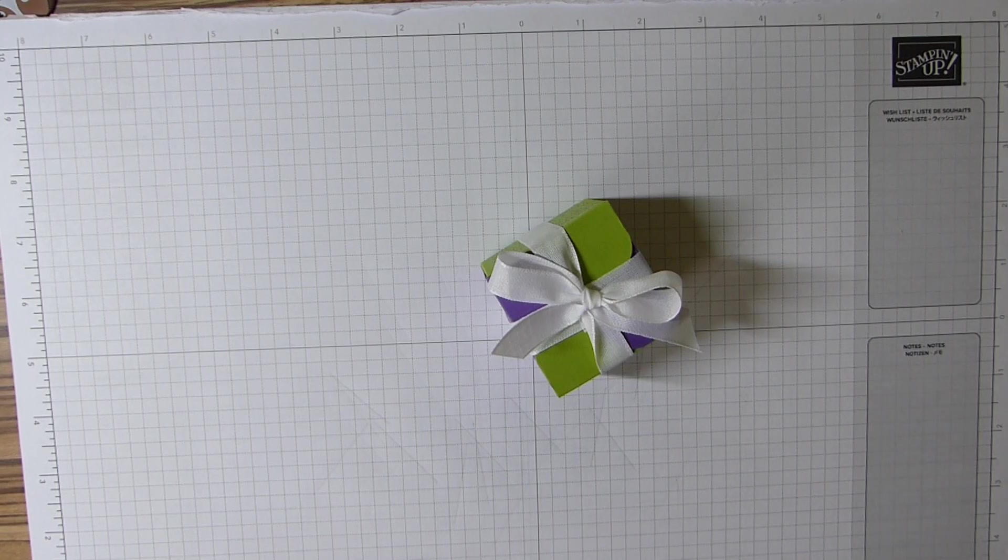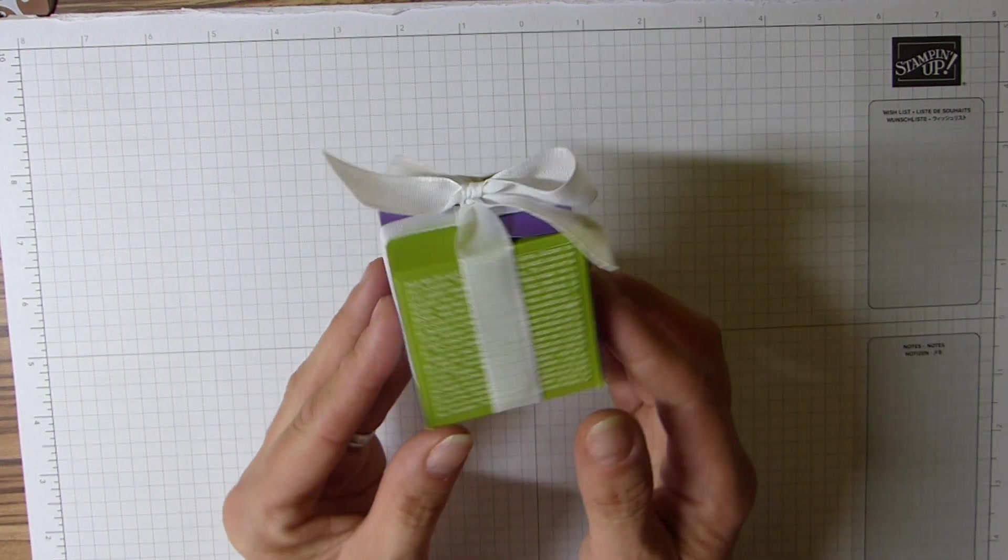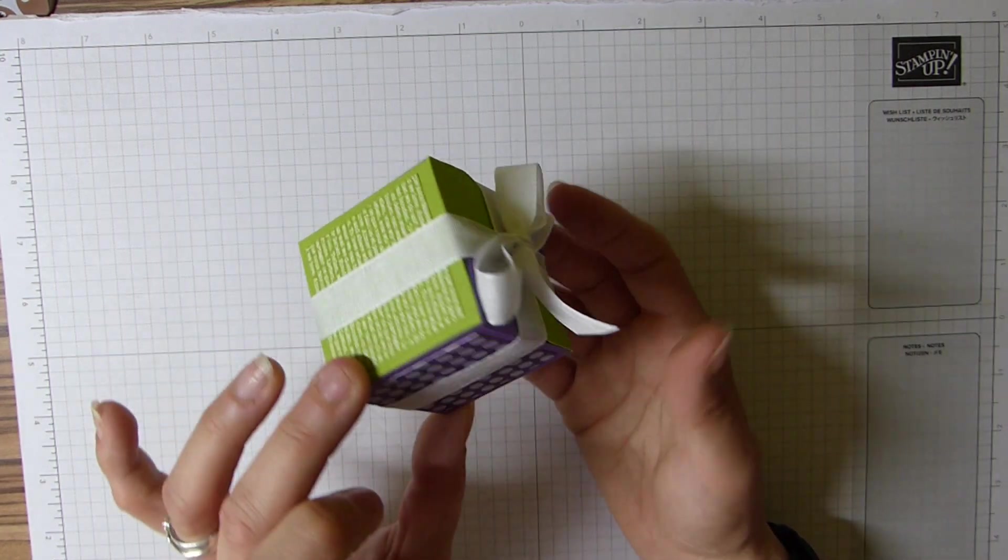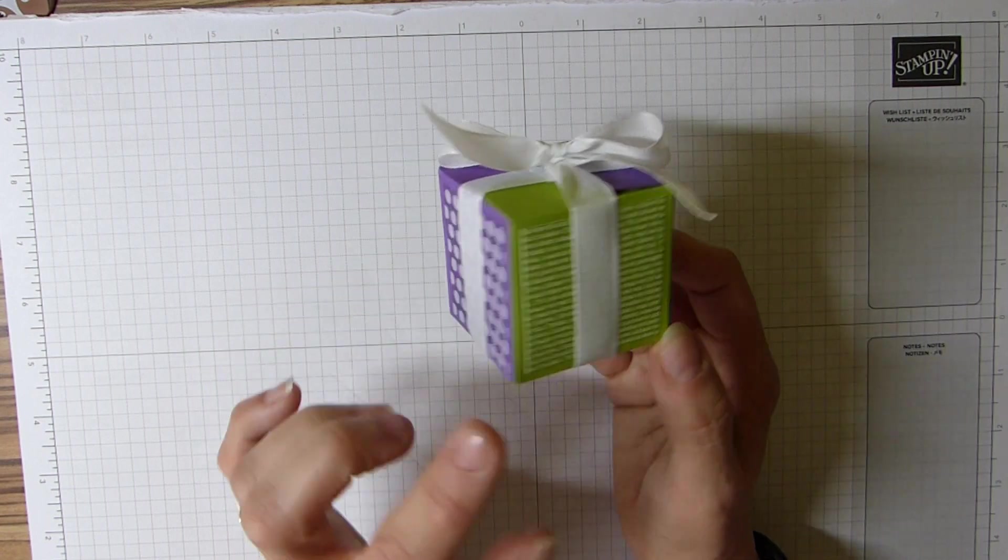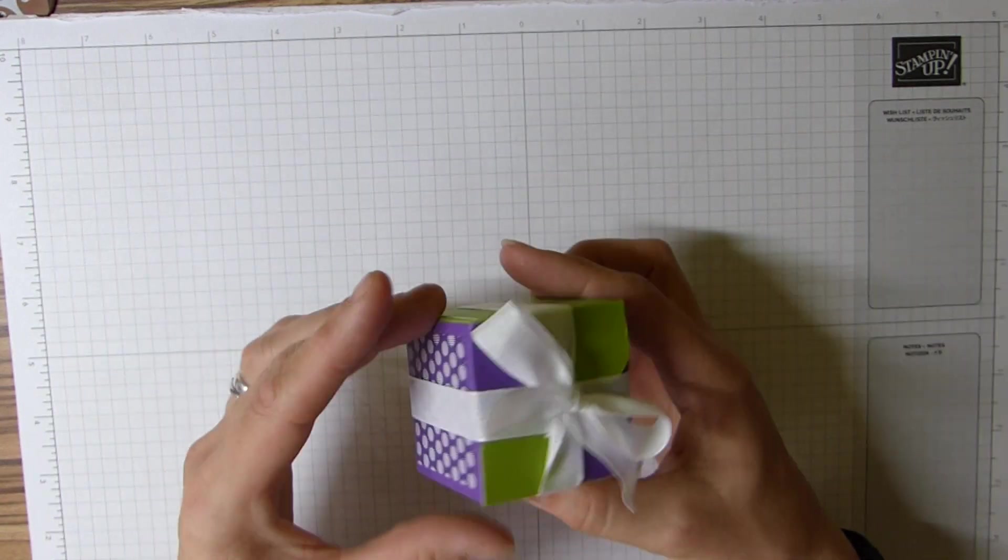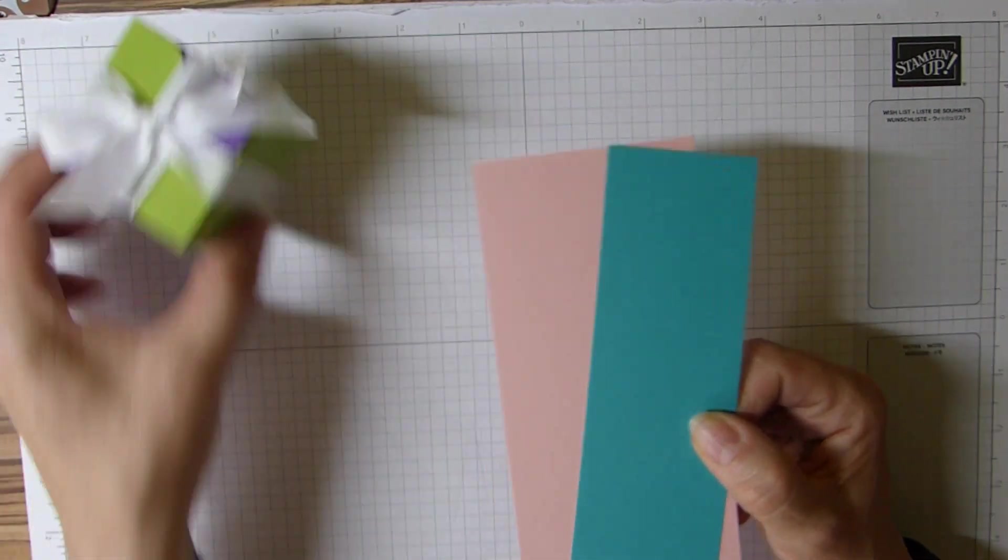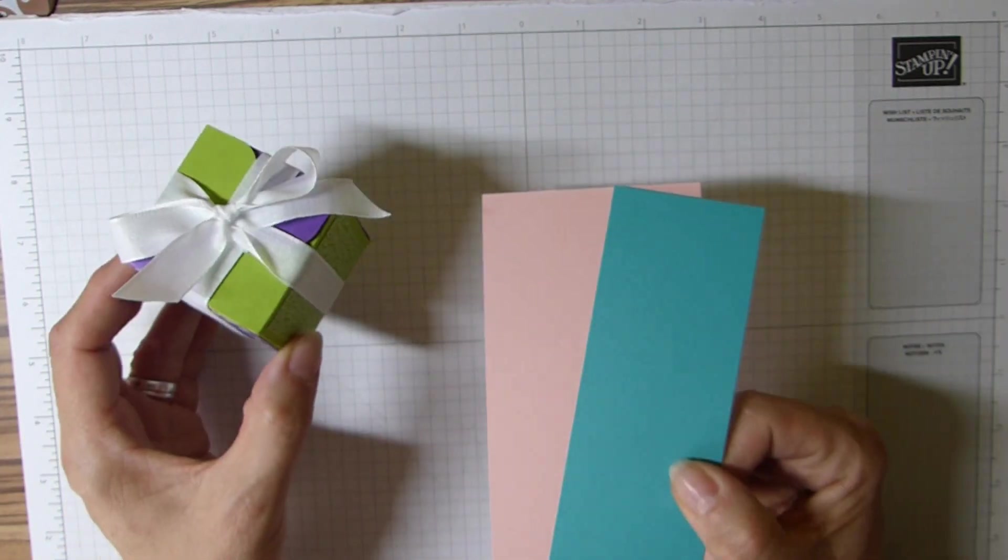Hi everybody, it's Sally from Sally Stampers, thank you for joining me today. Today I'm bringing you a fun two-tone box using just two colors that coordinate really well. I've used Granny Apple Green and Gorgeous Grape for this one, and I'll show you how to make it with Blushing Bride and Bermuda Bay. I've used the Gs on this one and the Bs on this one.